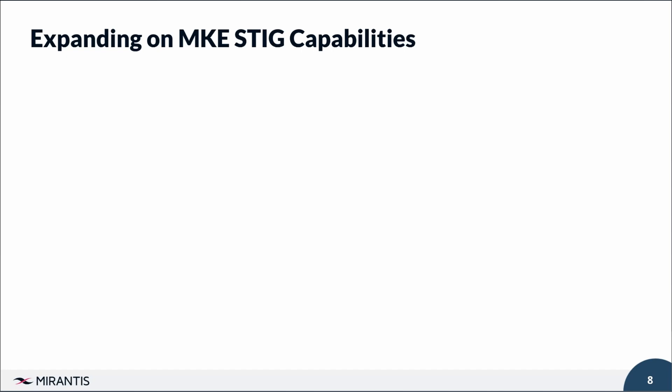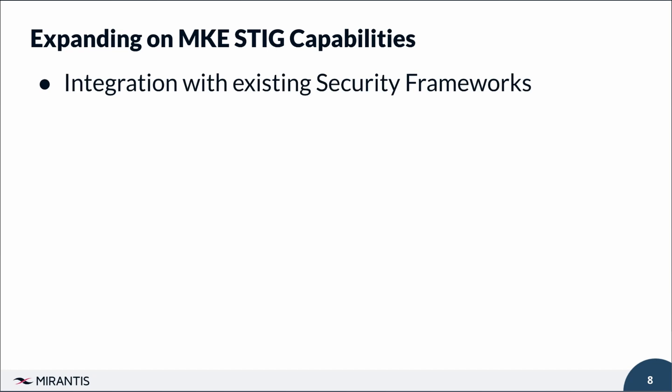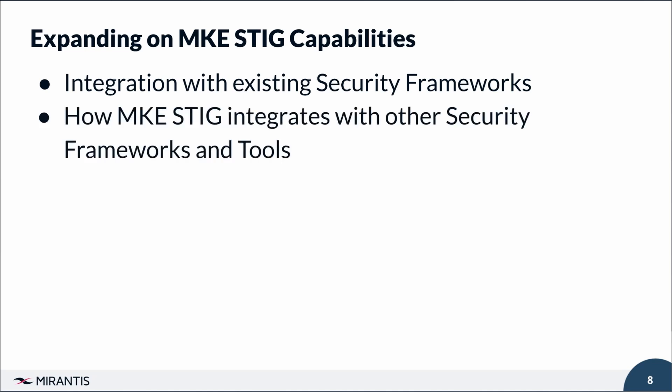One of the key strengths of the MKE STIG is its ability to integrate seamlessly with existing security frameworks and tools. The MKE STIG is designed to work alongside other well-established security frameworks such as NIST 800-53, ISO 27001, and CIS Controls. This ensures organizations can maintain a unified security posture without overhauling their existing systems. The STIG can be implemented using a variety of security tools and platforms, including integration with SIEM systems, vulnerability management tools, and other cybersecurity solutions.